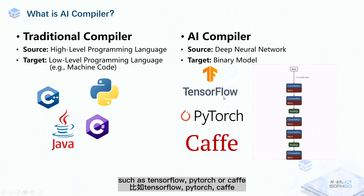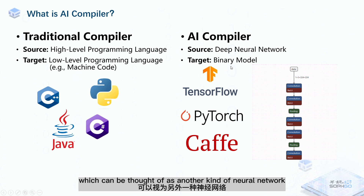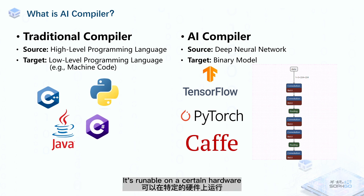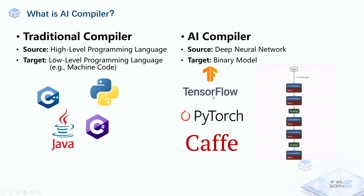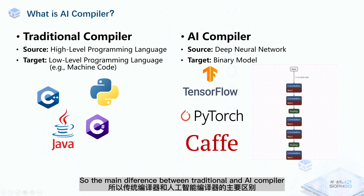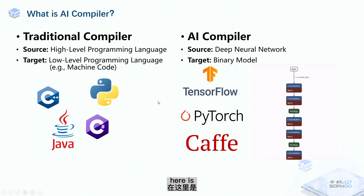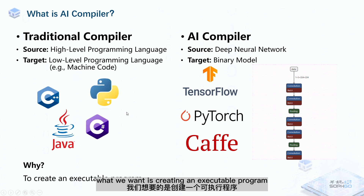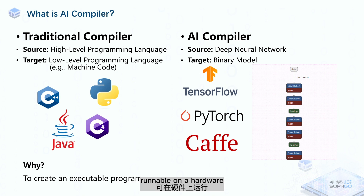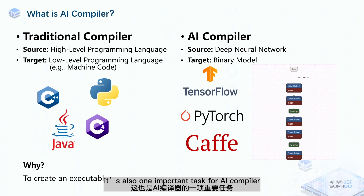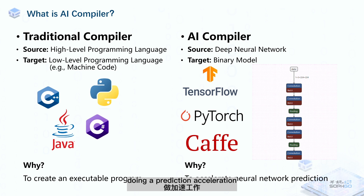Deep learning frameworks such as TensorFlow, PyTorch, or Caffe. Our target is getting a binary model, which can be thought of as another kind of neural network that is runnable on certain hardware. The main difference between a traditional compiler and an AI compiler is: for the traditional one, what we want is creating an executable program. Of course making a deep neural network runnable on hardware is also one important task for AI compiler, but our main task here is doing prediction acceleration.